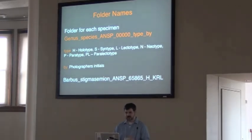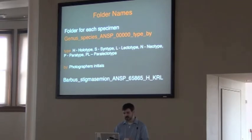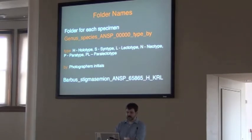Each of these images — the radiographs and the photographs — were put into another folder. For this one it's genus, species, museum identifier, and catalog number. Because these are types, we're also including type status: H for holotype, S for syntype, L for lectotype, and so on. Then the photographer's initials, so we know who did the photography and who to contact if they need to be rephotographed.